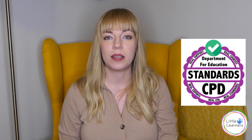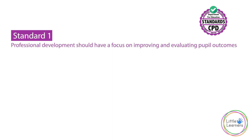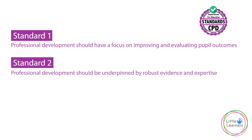This course will be following the DfE professional development standards, so let's take a look at how they apply in this particular course. Standard 1: professional development should have a focus on improving and evaluating pupil outcomes. The progress check at age 2 requires practitioners to review a child's progress and assess their development, as well as find their next steps in order to further support their learning in the setting. This course aims to give you the knowledge and the confidence to do this, therefore ensuring a focus on improving and evaluating the outcomes of the children in your setting.